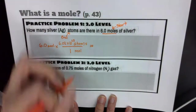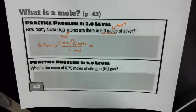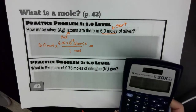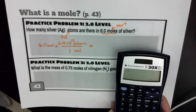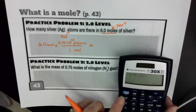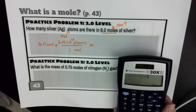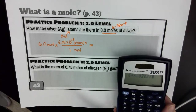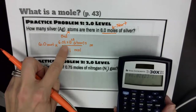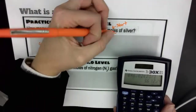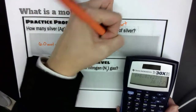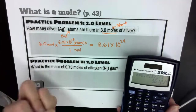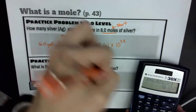All I need to do is put this into my calculator — and this is probably the trickiest part, how to enter it properly. I'm going to type 6, then times, then 6.02, then use 2nd E 23, then divided by 1, and hit enter. My answer comes out to 3.61 times 10 to the 24th, and my units — moles went away — so that's going to be atoms.